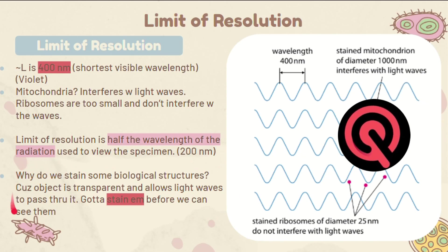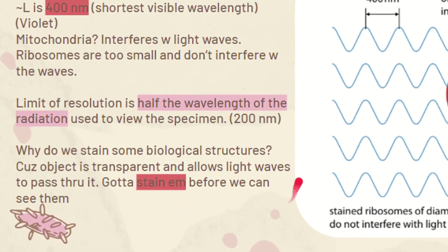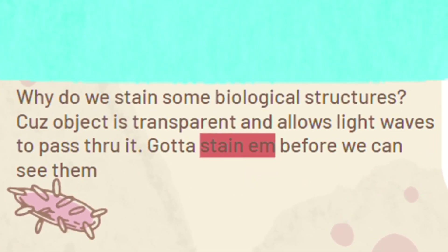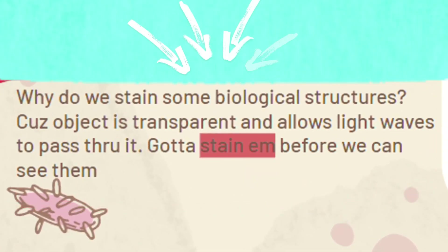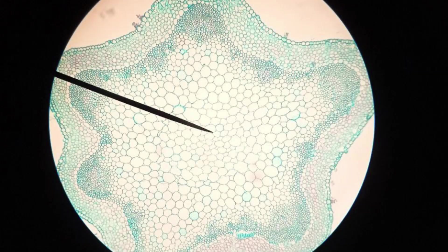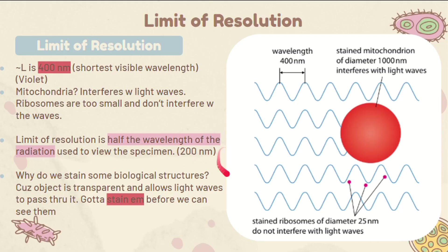If you're wondering why: some biological structures are transparent, allowing light waves to pass through them, so we have to stain them in order to see them.